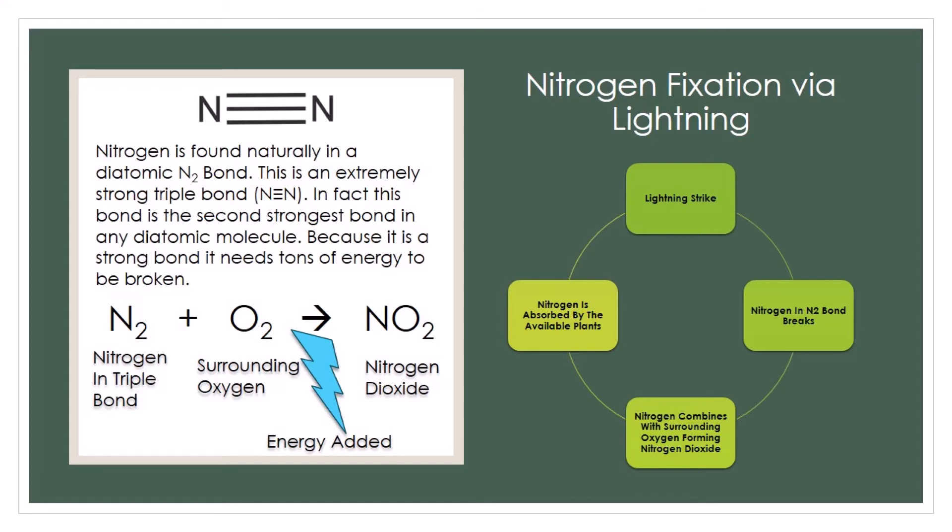Because it is a strong bond, it needs tons of energy to be broken. Once the bond is broken, another chemical reaction takes place, turning it into a plant usable form, forming nitrogen dioxide.